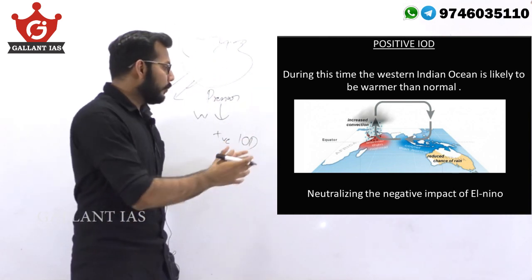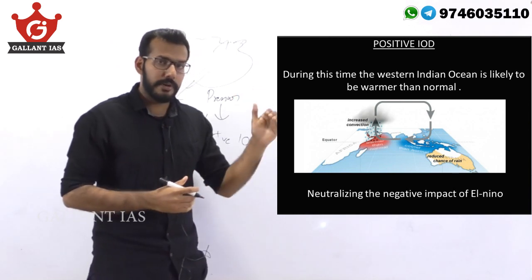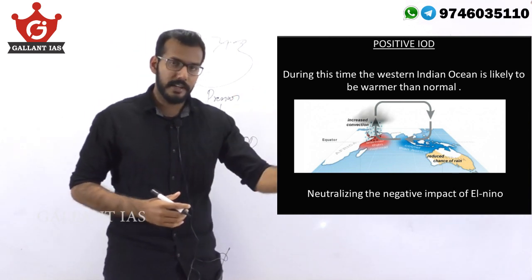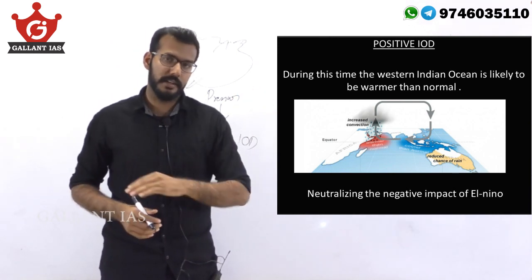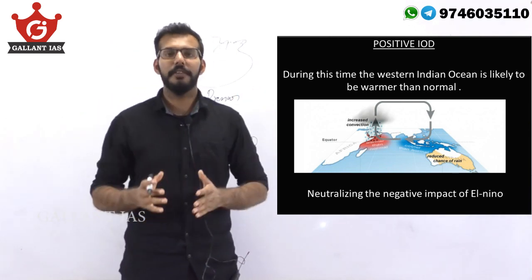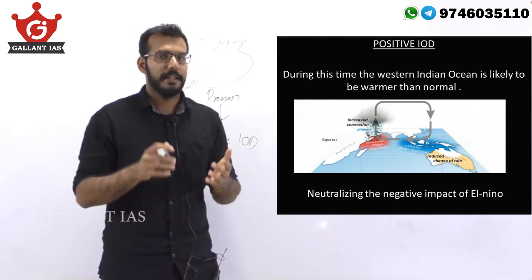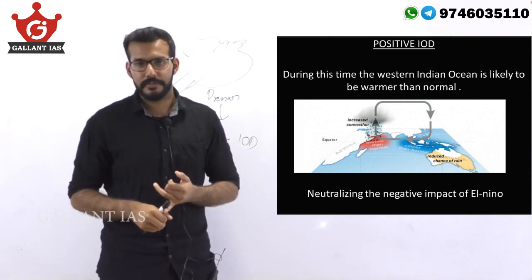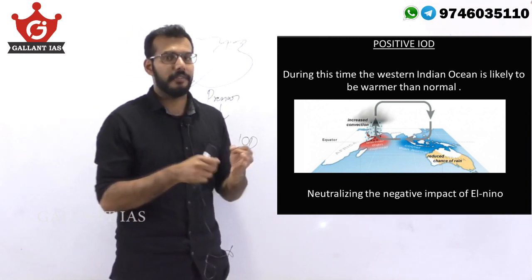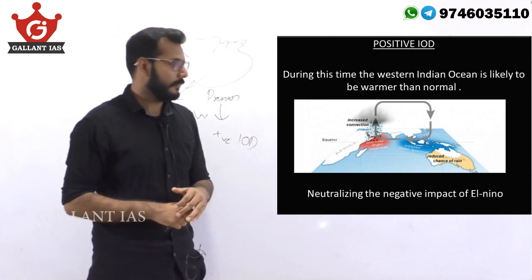This also means that a positive IOD results in a delayed monsoon in Australia. This is the main reason why there was a bushfire in Australia and floods in East Africa last year.